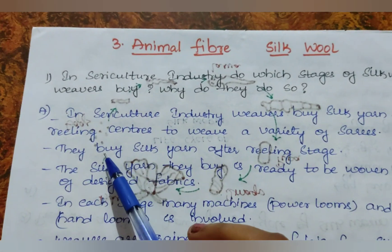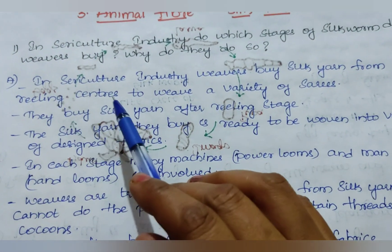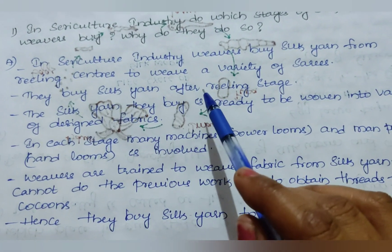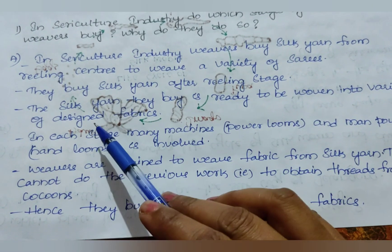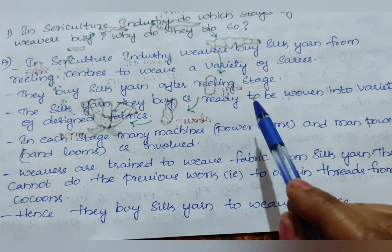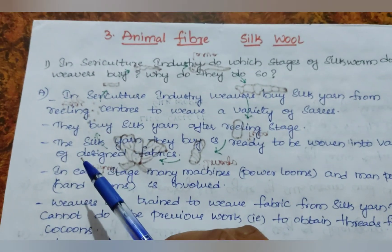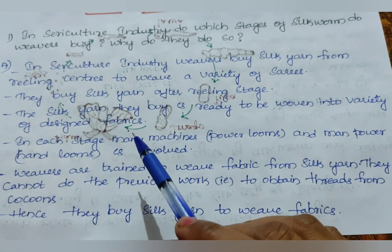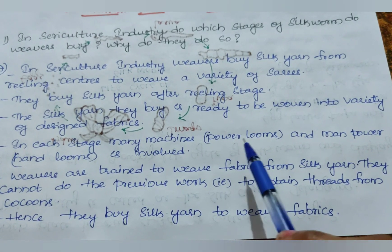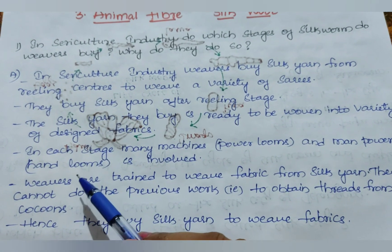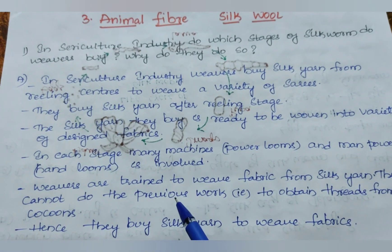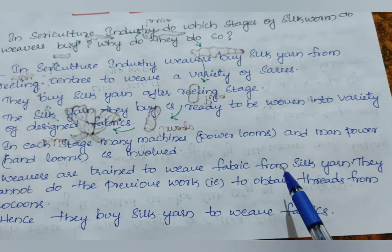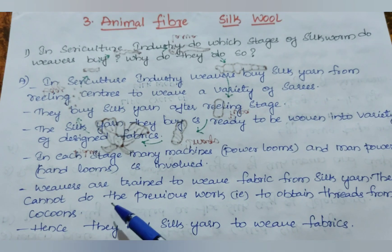Weavers buy silk yarn from reeling centers to weave a variety of sarees. They buy silk yarn after the reeling stage. The silk yarn they buy is ready to be woven into a variety of designed fabrics. In each stage, many machines — that is power looms and manpower hand looms — are involved. Weavers are trained to weave fabric from silk yarn.